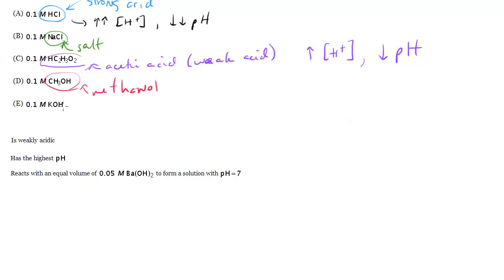And finally, we have KOH, which is a strong base. We recognize that from the OH paired with the K in particular. And just like with the HCl, it's going to completely dissociate. So this is going to have a very, very high OH minus concentration, which means it's going to have a very, very high pH.